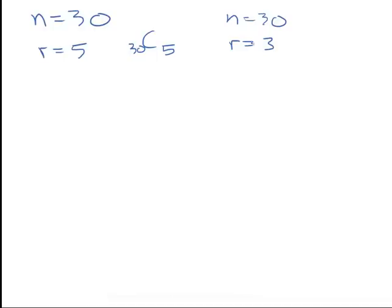Still 30 people, but now we're choosing 3 of them to be CEO, CFO, and COO. Does order matter? Yes. That would be a 30 pick 3 permutation. If you chose Bill, Tom, and Jane in that order you get different CEO, CFO, and COO assignments than if you chose Jane, Bob, and Tom — so order matters.